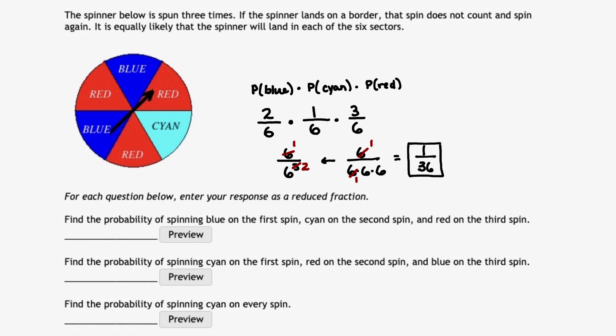That completes part one. The probability of getting blue followed by cyan followed by red is one out of 36. In the next video, we'll take a look at the second part to this problem.